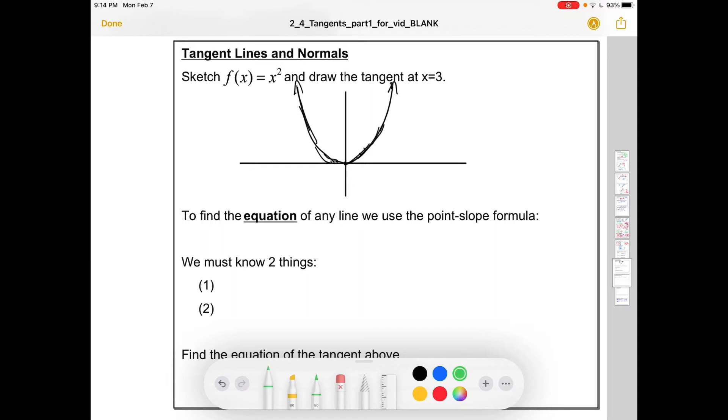And I could think about the tangent at x equals 3. Maybe it looks something like this. And we can find the slope of that now. The question is how do we actually find the equation of that line?